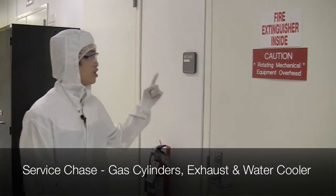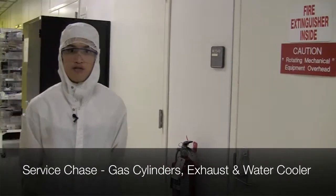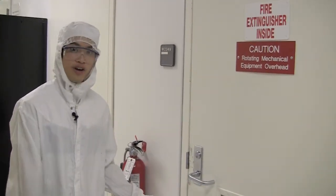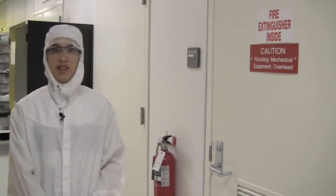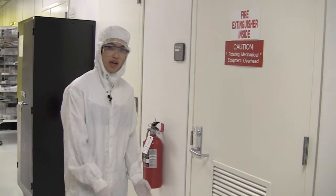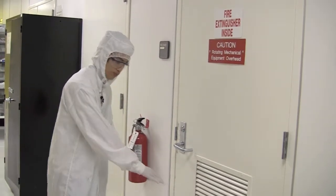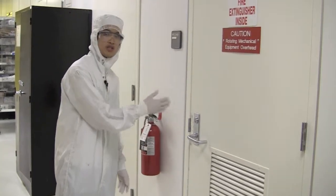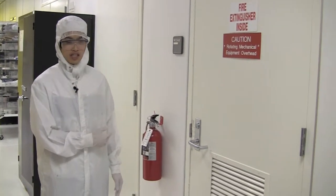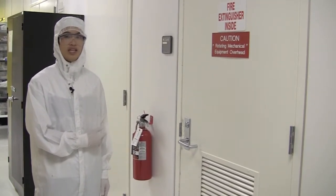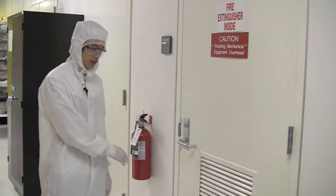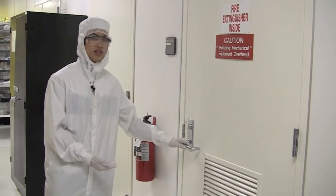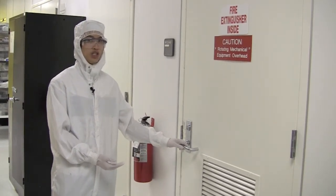We're standing outside of 2349, which is the service chase for the Easy Tube 3000. We need to verify that the gas cylinders are turned on and the water chiller is on. But before we enter, we need to make sure there's no spills outside the service chase door and no pungent smells coming from it. If you ever see one of those situations, contact staff immediately. Today, there's no spills and no smells, so I'm going to enter the service chase now.